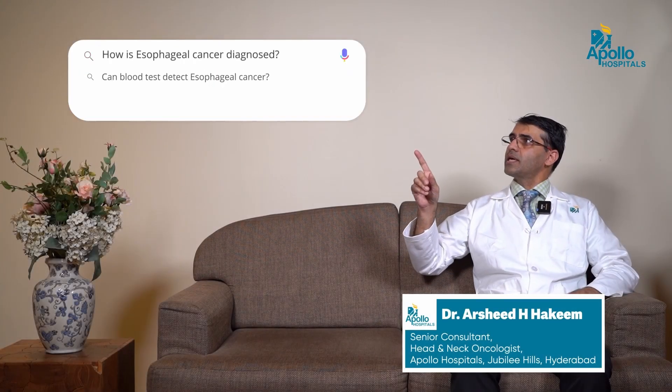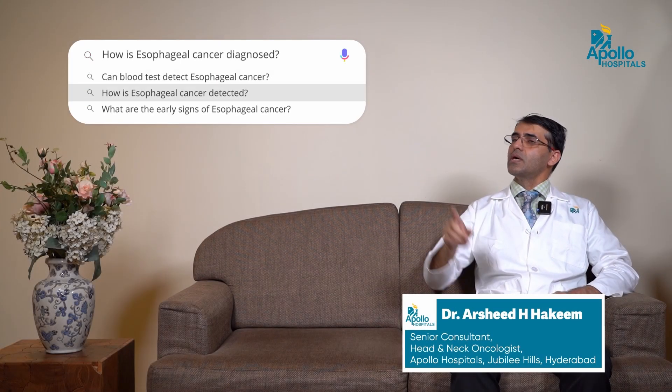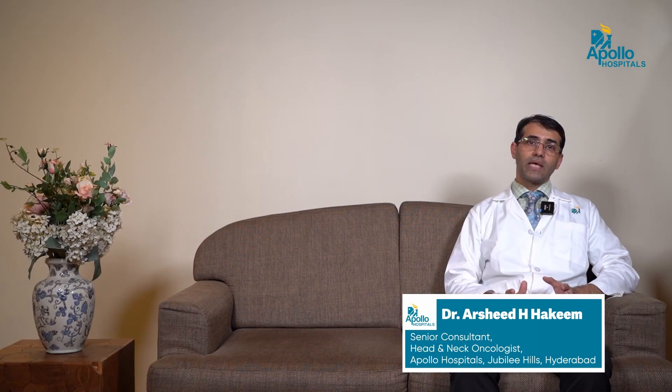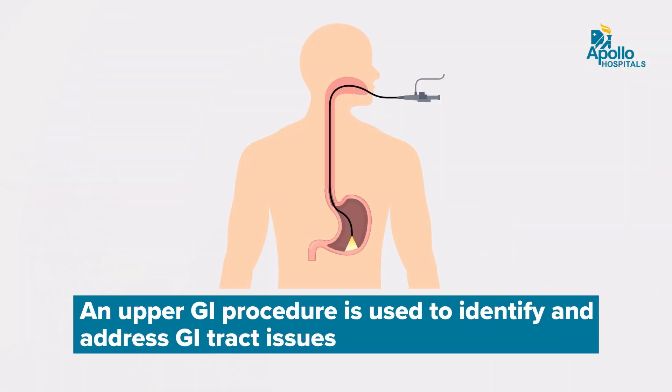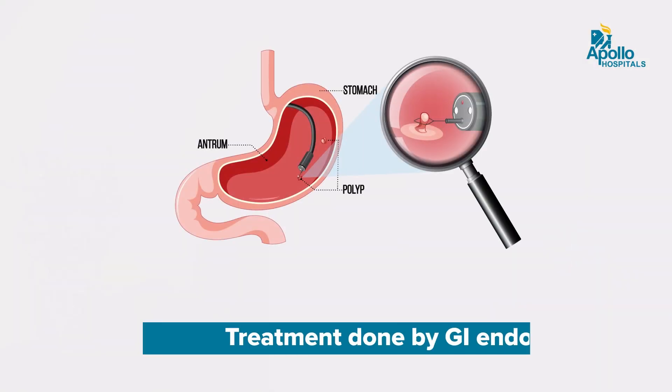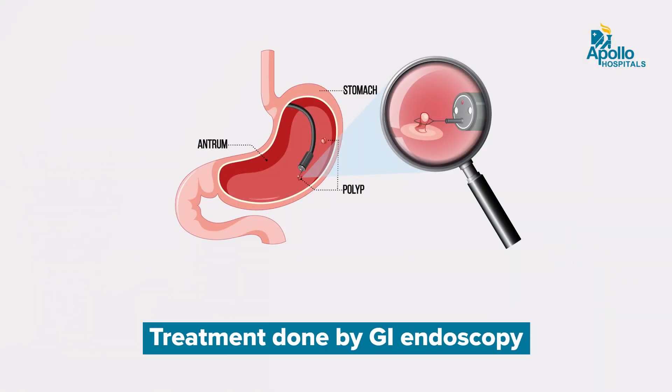How is esophageal cancer diagnosed? The most common way to diagnose esophageal cancer is by upper GI endoscopy. It can be done as an office-based procedure where an endoscope provides visualization of the full esophagus, and a small piece of tissue can be taken from the growth and sent to a laboratory for a definitive diagnosis.